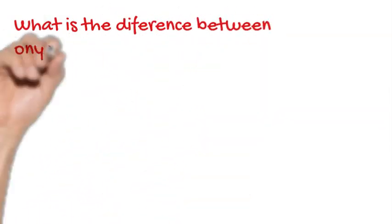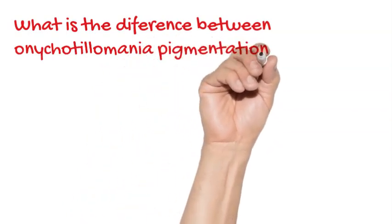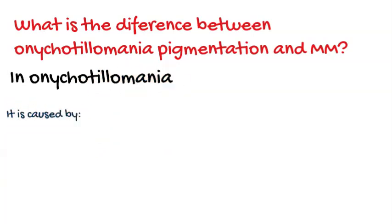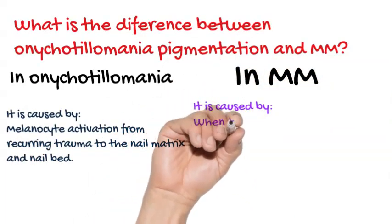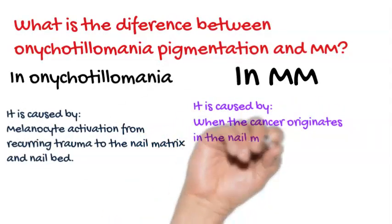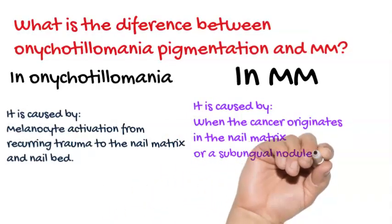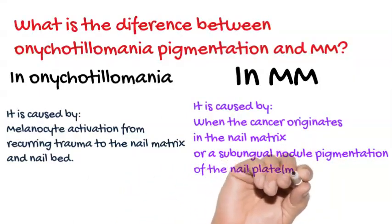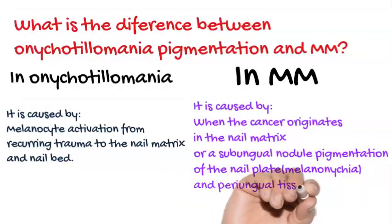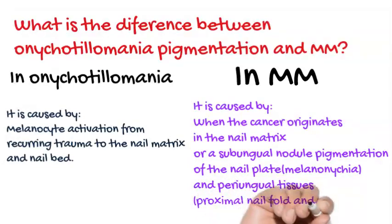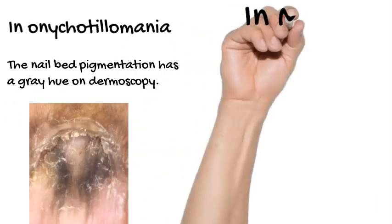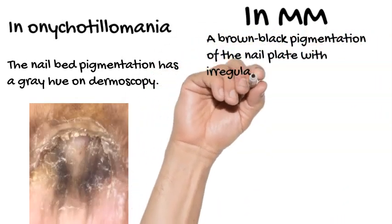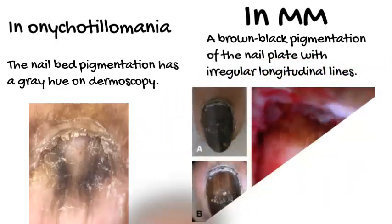What is the difference between onychotillomania pigmentation and malignant melanoma? In onychotillomania, it is caused by melanocyte activation from recurrent trauma to the nail matrix and nail bed. In malignant melanoma, when the cancer originates in the nail matrix or subungual nodule, melanonychia of the nail plate develops; if at periungual tissue, pigmentation appears at the proximal nail fold and hyponychium. In onychotillomania, nail bed pigmentation has a gray hue on dermoscopy, while in malignant melanoma there is brown-black pigmentation of the nail plate with irregular longitudinal lines.